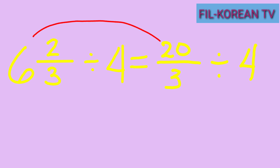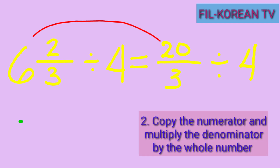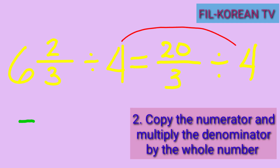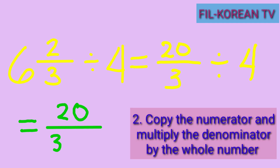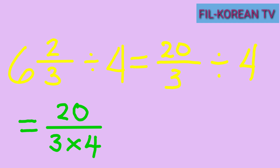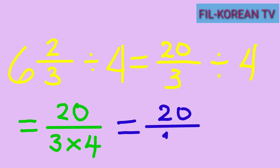Now copy the numerator 20 and multiply the denominator 3 by the whole number 4. So 3 times 4 equals 12. The result is 20 over 12, which is an improper fraction.